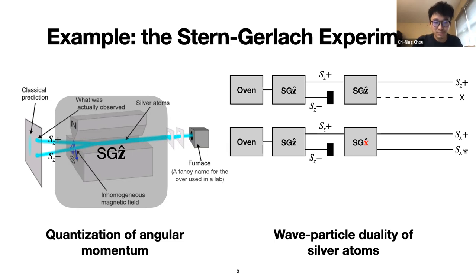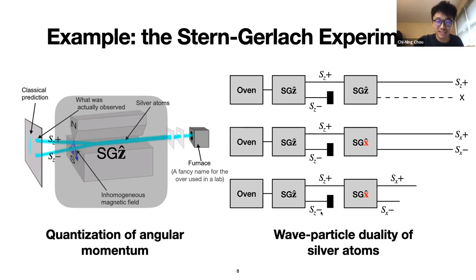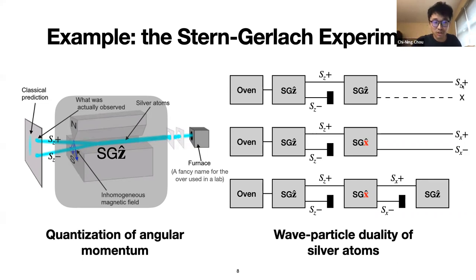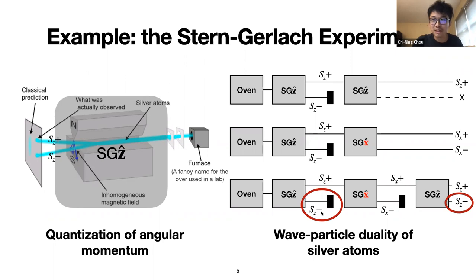The most interesting thing happens when we block the Sx-minus and feed into SGz again. We know there will be two outcomes, but when fed back into the original SGz direction, both plus and minus angular momentum in the z-direction appear. The mysterious thing is: in the beginning we blocked out all minus angular momentum in the z-direction, but it shows up again at the end. If these were purely particles, this shouldn't happen — it should be a wave. But silver atoms had long been regarded as particles. This experiment gives us a feeling for the starting point of quantum physics.